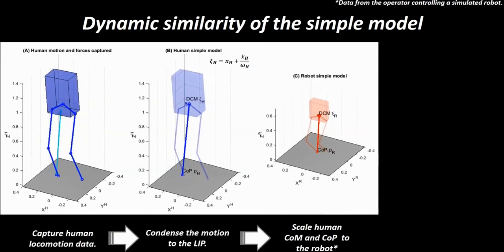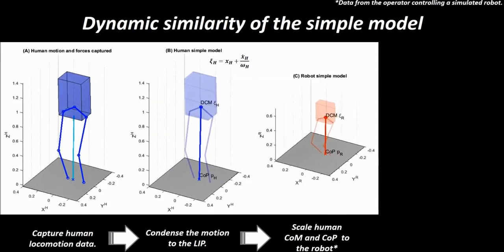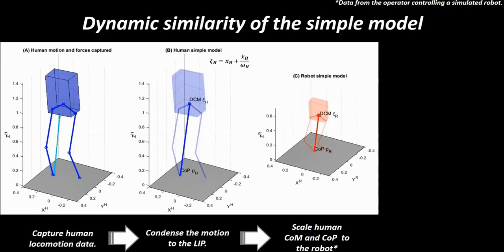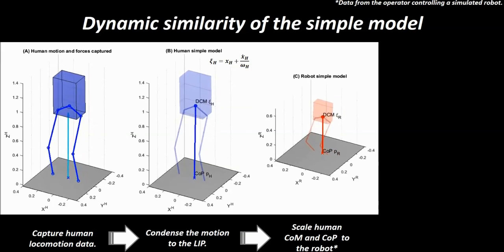Next, we scale the motion of the pendulum model to robot proportions. In this work, the machine is about one third of human size and substantially lighter.